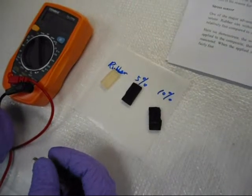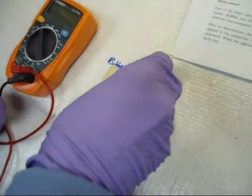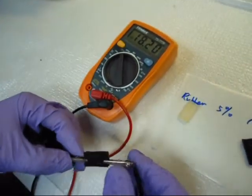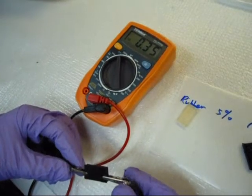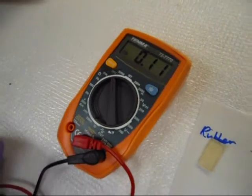Now, we are seeing by adding 5 weight percent of graphite into the rubber, its resistance will decrease. Now, its resistance can be measured with our equipment. Its resistance is 0.1 megaohms.